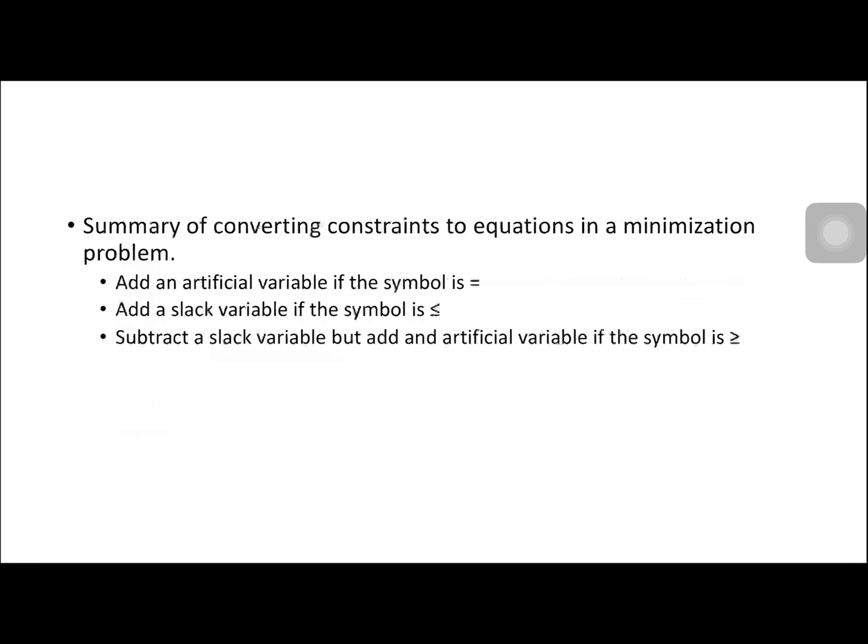Minimization problems commonly deal with costs. Slack variables do not contribute any amount to cost, but artificial variables contribute the biggest amount to cost in a minimization problem. They contribute to the objective an amount greater than any of the coefficients of the solution variables. In representing the contribution of the artificial variable to the objective, we may use a quantity which is a power of 10 greater than any of the coefficients found in the constraints and objective — such as 10, 100, 1000, and so on.